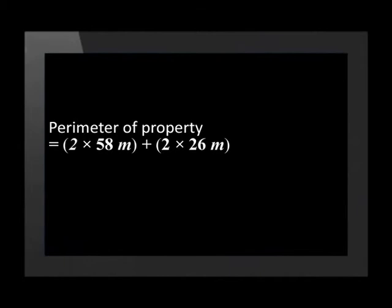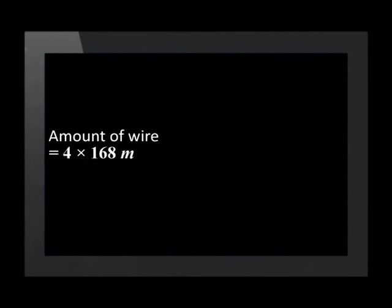First, we need to calculate the perimeter of the property. To do this, we need to calculate the sum of double the length and double the breadth. This is 116 plus 52, which equals 168 meters. To find the amount of wire that needs to be used, we must multiply the perimeter by 4 because the electric fence has 4 strands of wire. So it's 4 times 168, which amounts to 672 meters in total.